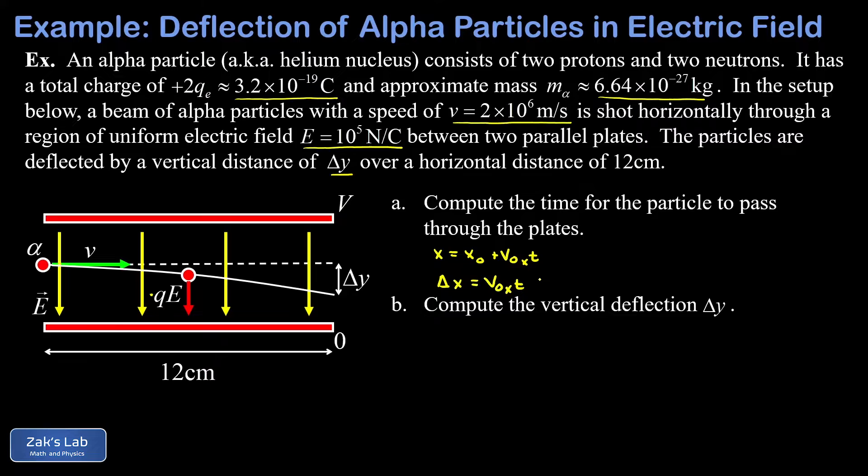And that's basically just saying distance equals rate times time in that X coordinate direction. Well, to find the time it takes to pass through the plates, I just have to take that horizontal displacement delta X and divide by the X velocity of the particles.